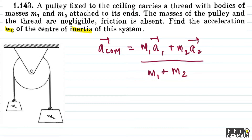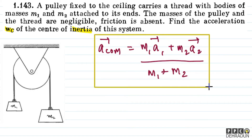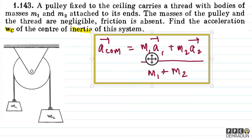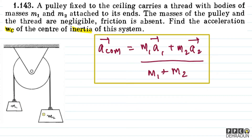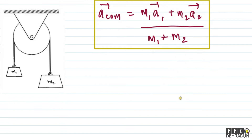So the first thing we need to find is a1 vector and a2 vector — meaning the accelerations of M1 and M2. Then we will put them into the formula.